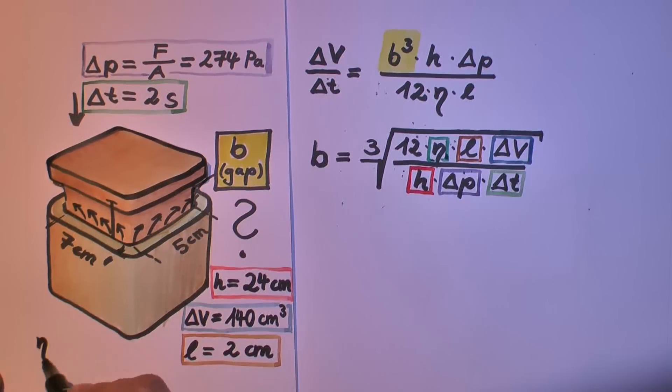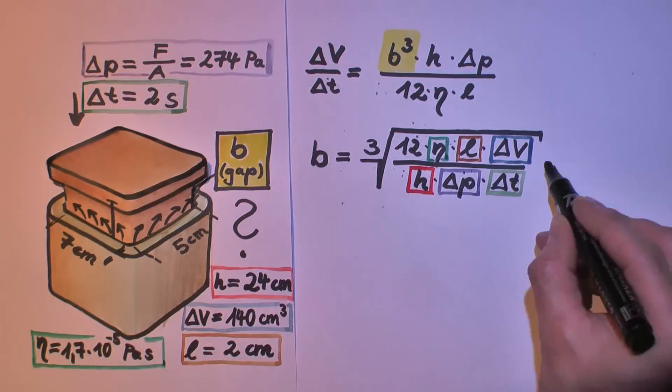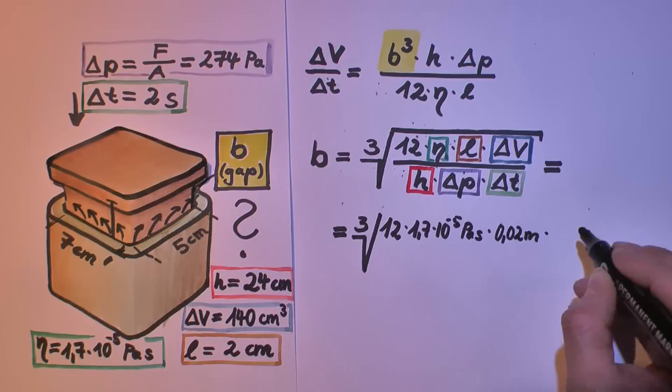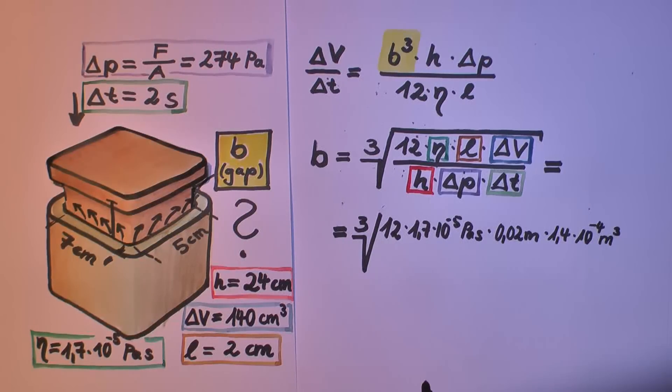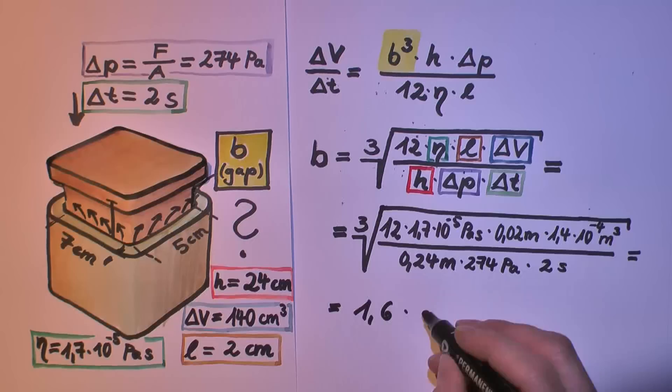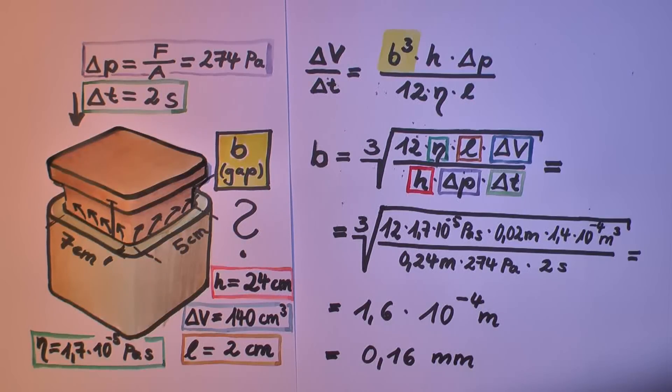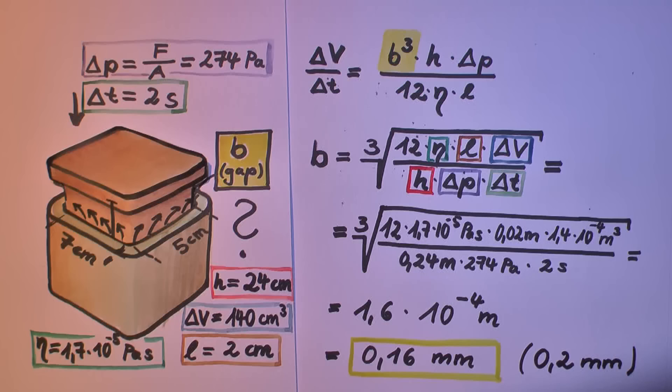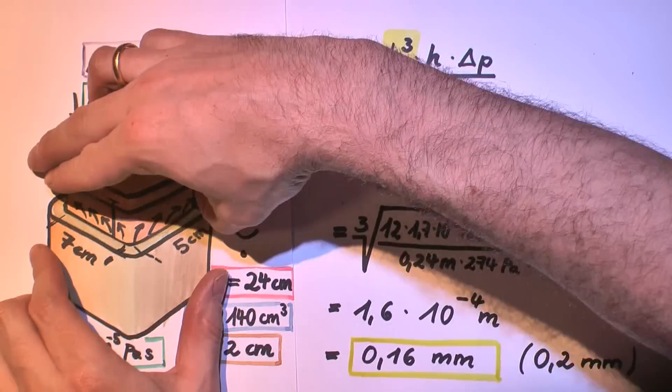Eta is the viscosity. Let's fill all this in and calculate the third root. It turns out that the gap has 0.16 millimeter or because of the amount of guesswork roughly 0.2 millimeters. Sounds realistic.